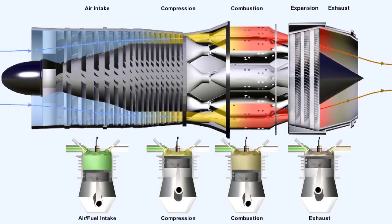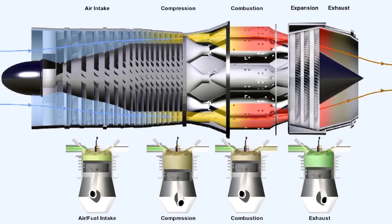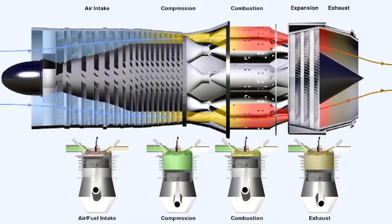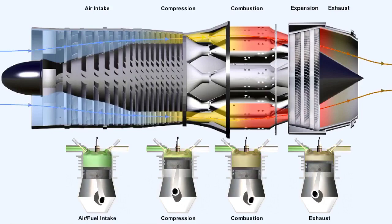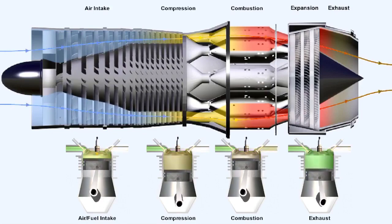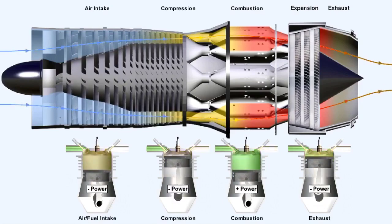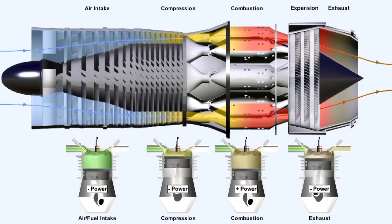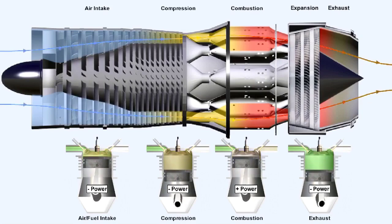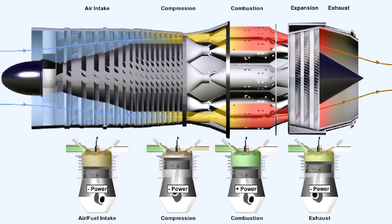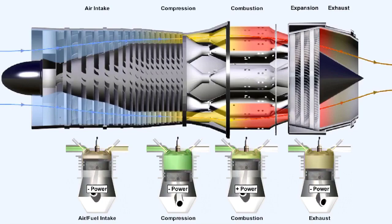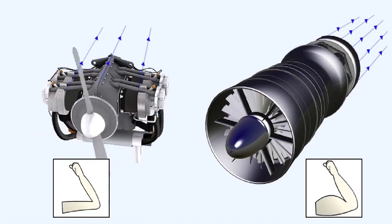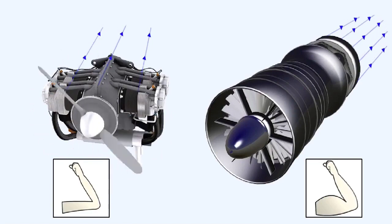Other differences between the piston engine and the gas turbine engine concern the continuous manner in which these processes occur in the gas turbine engine, as opposed to the intermittent procedure occurring in the piston engine. In the piston engine, only one of the strokes is utilized in producing power; the other three are effectively absorbing power. In the gas turbine engine, the three idle strokes have been eliminated, thus allowing more time for the burning of fuel. This is just one of the reasons why the gas turbine engine has a greater power-to-weight ratio than the piston engine.